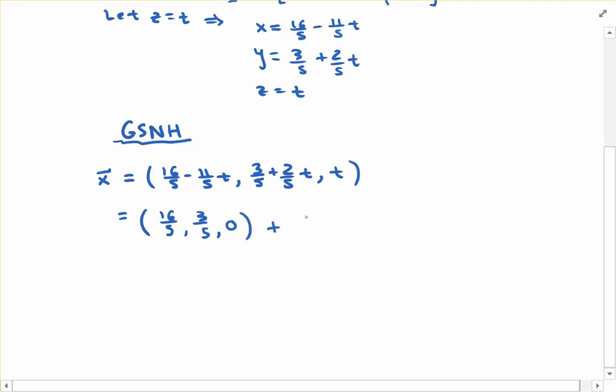The second ordered triple would have to be negative 11 fifths t as the first component, 2 fifths t as the second, and t as the third component. Take a moment to convince yourself that if you add these two vectors or ordered triples together, you get the original ordered triple.